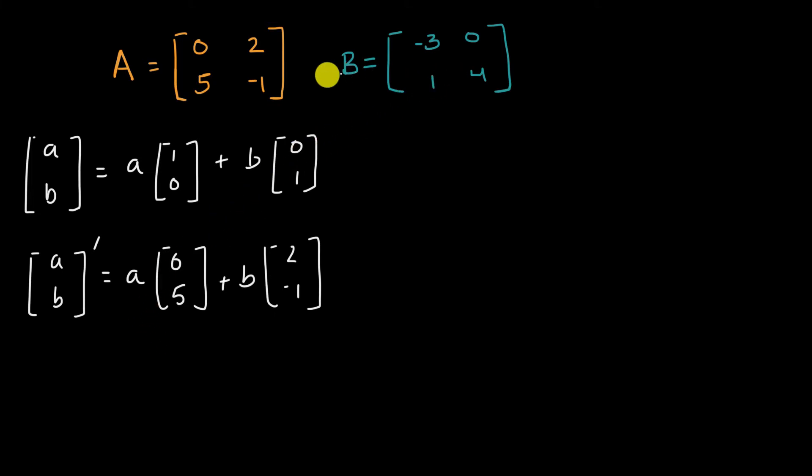But what we're going to think about in this video is what would be the transformation matrix for the composition? And I could write that as B of A right over here. And you might recognize this from function notation, where essentially it's saying you would apply the function A first, and then whatever the output of that is, you would then input that into B and you would get the output of that. And that makes sense because you can view transformation matrices really as functions, functions that map points on the coordinate plane. So in this situation, what would be the transformation matrix that is a composition of these two? Pause this video and think about that.